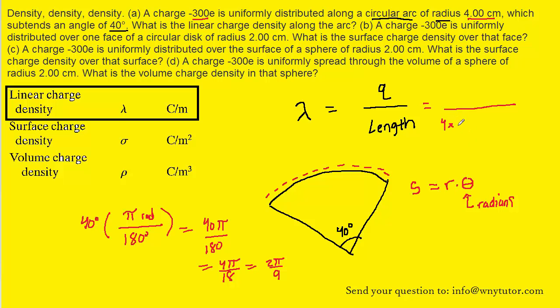So why don't we come over here and plug in for the length the expression r theta. And we'll take the 4 centimeters. We'll multiply it by 10 to the minus 2 so that it becomes meters. And then we will multiply by that angle of 2 pi over 9 radians. The amount of charge is given directly. It's negative 300e. So that means we'll have negative 300 multiplied by 1.6 times 10 to the minus 19th coulombs.